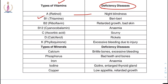Deficiency of B1 causes beriberi — characterized by weak muscles and weight loss. Deficiency of B12 causes anemia, extreme fatigue, depression, and dementia. These are all conditions related to deficiency of B12. Vitamin C deficiency causes scurvy — characterized by bleeding gums, skin spots, and it may even affect the immune system. Bleeding gums is the main symptom.